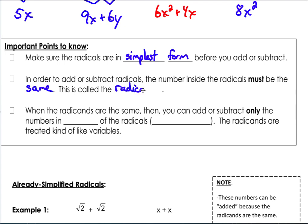In order to add or subtract radicals, the number inside the radical must be the same. This is called the radicand—that's the number inside of the radical. Just like in the numbers up top, we've got to have the same things there for those to be like terms.